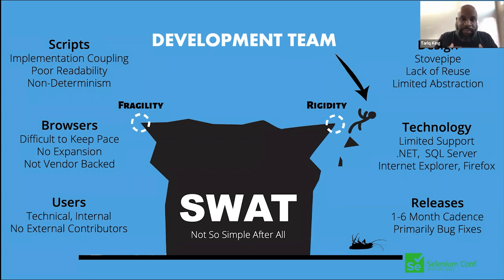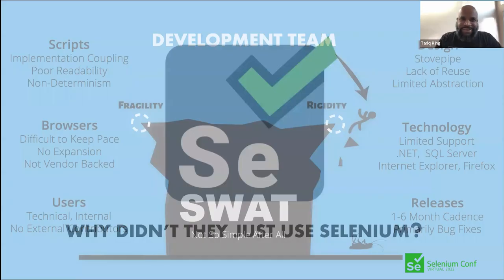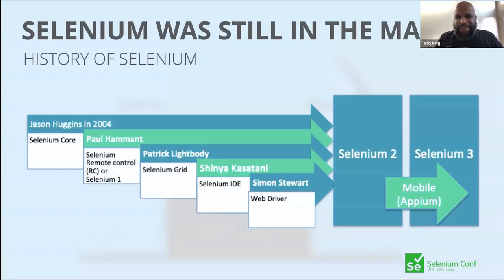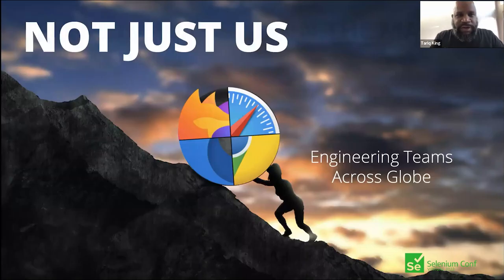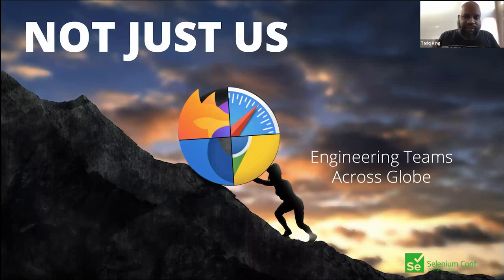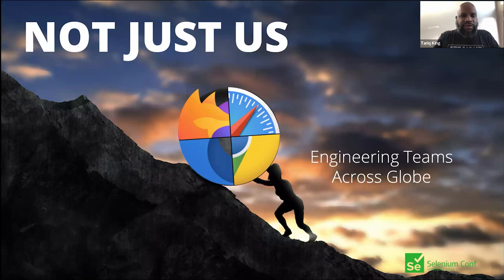You're probably thinking: why didn't they just use Selenium? Well, there was no mature Selenium at the time. Pieces of it were popping up, and every company was working on their own version of solving this problem. What we know Selenium to be now simply wasn't there yet — and it wasn't just Ultimate Software, it was engineering teams across the globe dealing with UI testing against rapidly changing browsers.